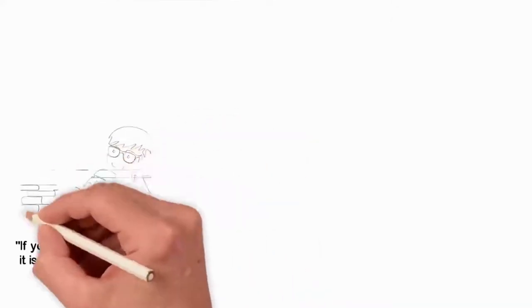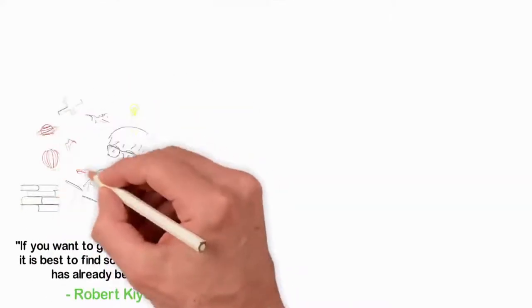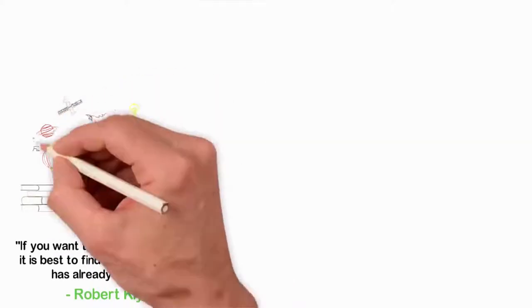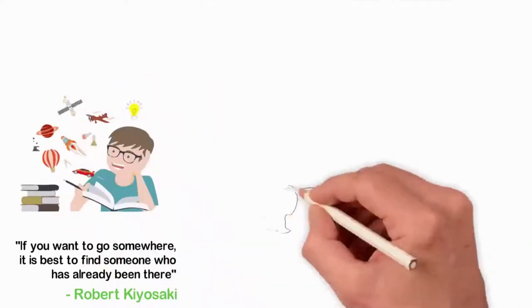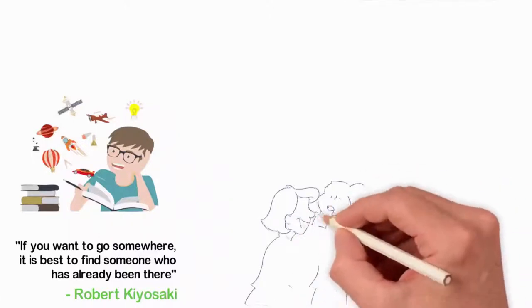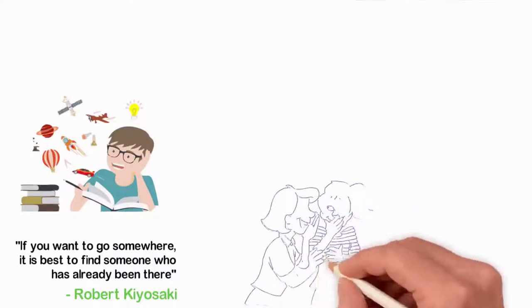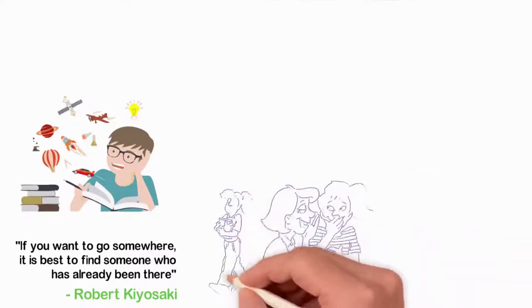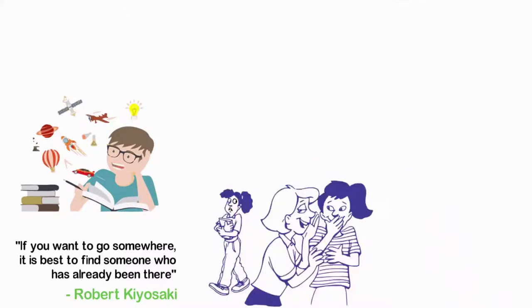If you want to achieve something, it's best to first sit down and make a list of people who have achieved that particular thing and make them your teachers. Not only that, you must try as much as possible to avoid the advice of people who have never achieved what you want to achieve, because these people will poison your dreams and make you be like themselves.